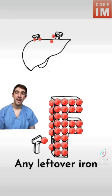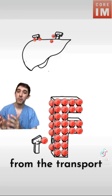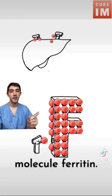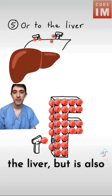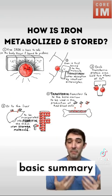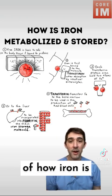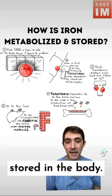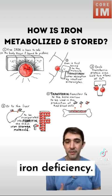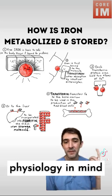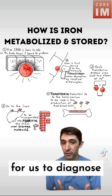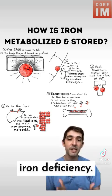Any leftover iron is transferred from the transport molecule transferrin to the storage molecule ferritin. This is mostly in the liver, but is also found in places like the spleen. So that's a pretty basic summary of how iron is metabolized and stored in the body. But remember, I still want to know if my patient has iron deficiency — so let's keep this physiology in mind when we think about labs that might be helpful to diagnose iron deficiency.